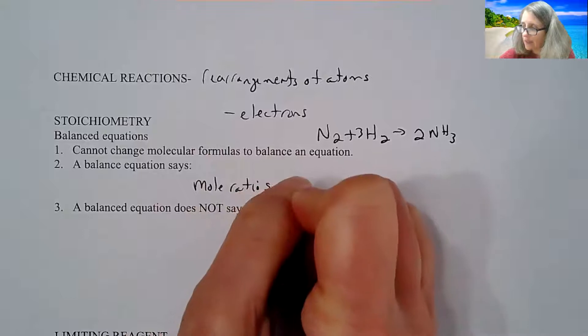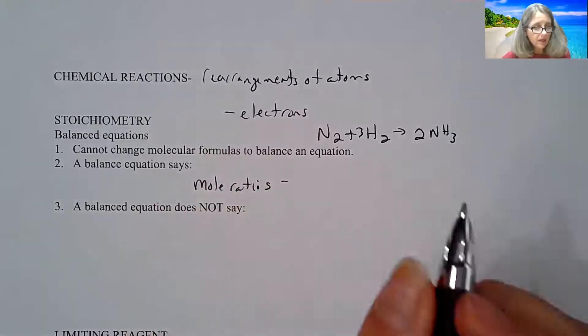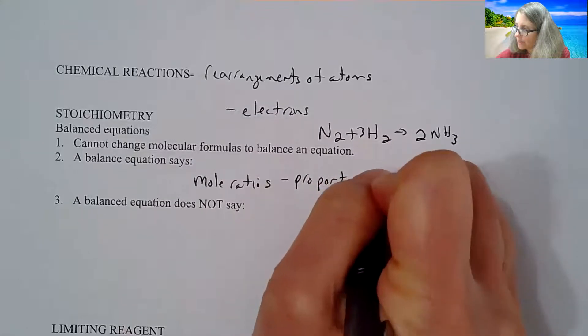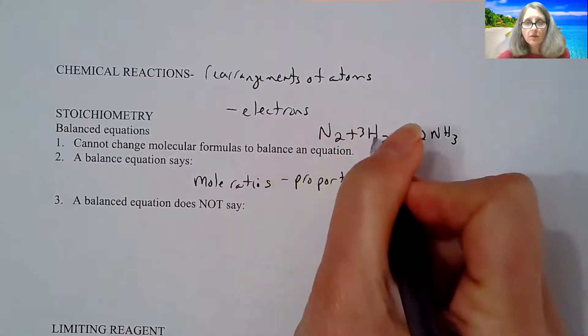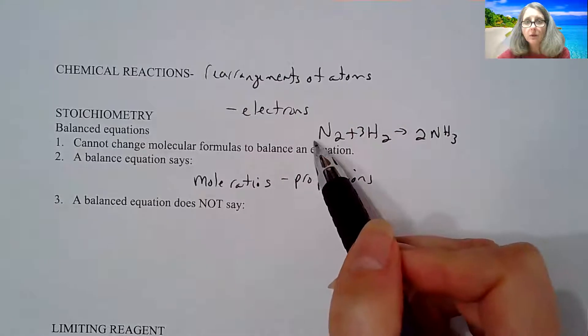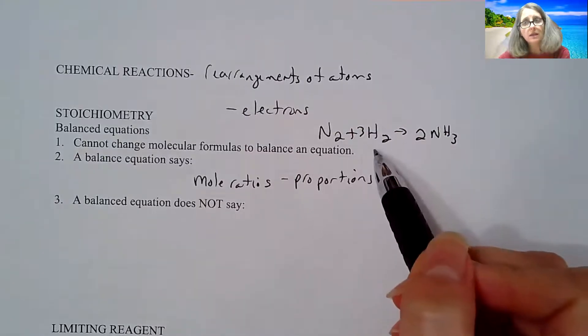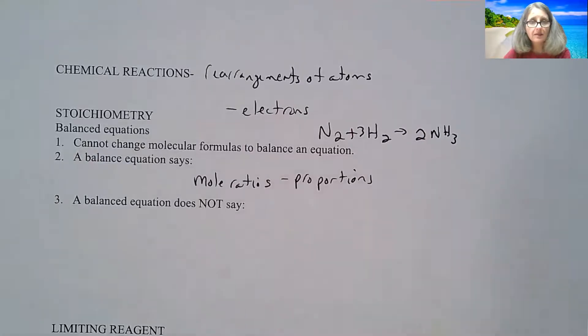And the balanced equation does give me what I call my mole ratios. So I have it as kind of a recipe for chemists. It gives me my proportions. So if I have a one in front of the nitrogen and a three in front of the hydrogen, that means for every one mole of nitrogen, I need three moles of hydrogen. And that is always going to be the case for this reaction.